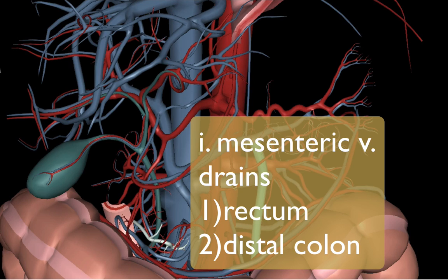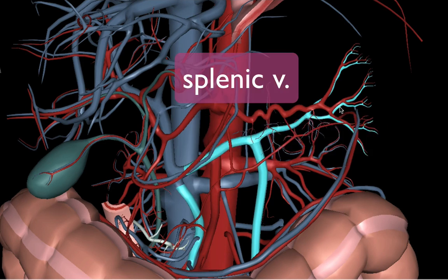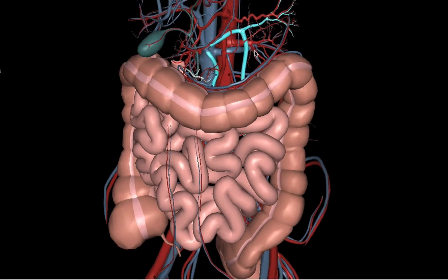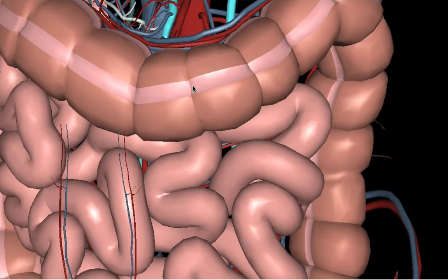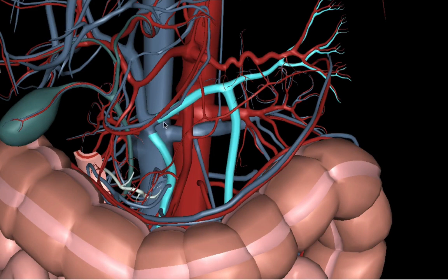The inferior mesenteric vein receives blood from the rectum and distal parts of the colon. It converges with the superior mesenteric vein into the splenic vein. The spleen is not shown here, but this vein is the location for the drainage of both the superior and inferior mesenteric veins.